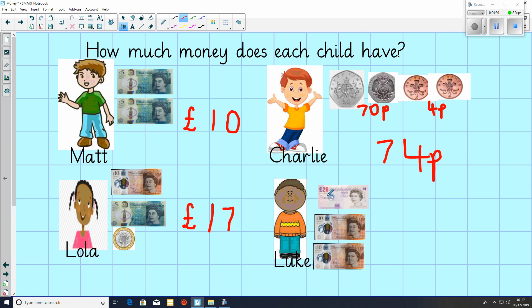And Luke has got 20 pounds, add 10 pounds, add 10 pounds, which is 40 pounds. Who has got the most amount of money? And who has got the least?